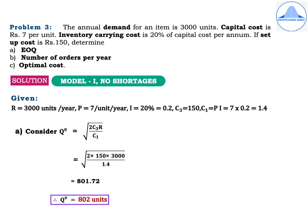EOQ: Q⁰ = √(2C₃R / C₁) = √(2 × 150 × 3,000 / 1.4) = 801.72, so Q⁰ ≈ 802 units.